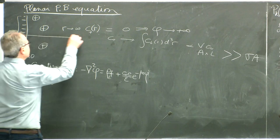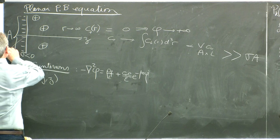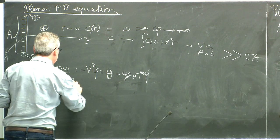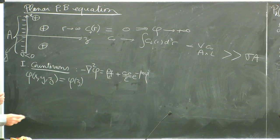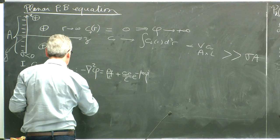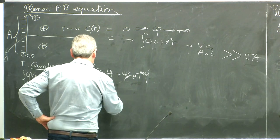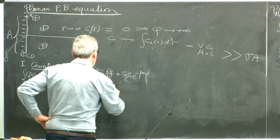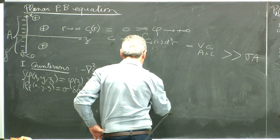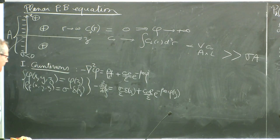Because of the planar symmetry — calling z the perpendicular direction and x, y the in-plane directions — φ is only a function of z, and ρ_F = σ δ(z). The Poisson-Boltzmann equation becomes an ordinary differential equation: −d²φ/dz² = σ/ε · δ(z) + (c_0 e/ε) e^{−β e φ(z)}. Integrating near the wall gives the boundary condition: φ′(0⁺) = −σ/ε.